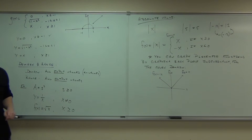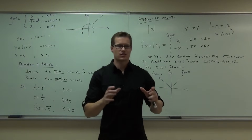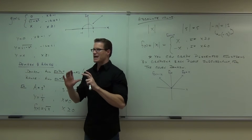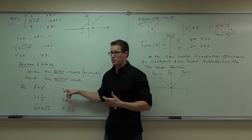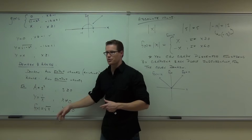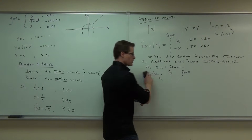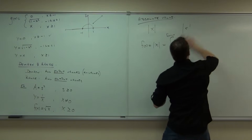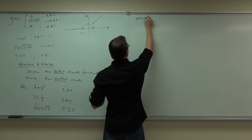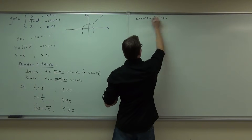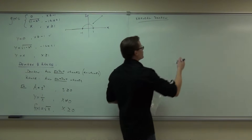We're going to define domain in a special way called the natural domain. The natural domain is basically everything that works in the formula, including natural restraints of the problem — like side lengths of a square — as well as formulaic restraints like square roots or division by zero. Natural domain means everything that works in your formula or function.